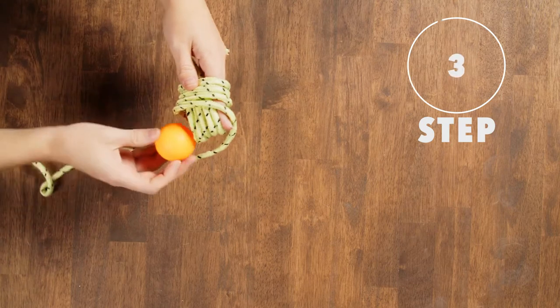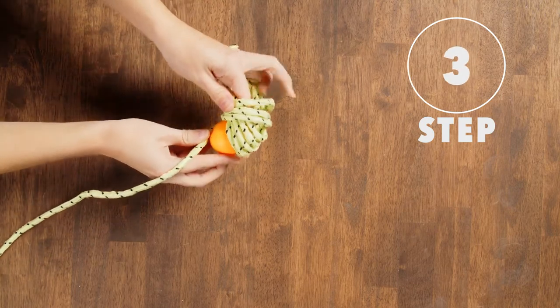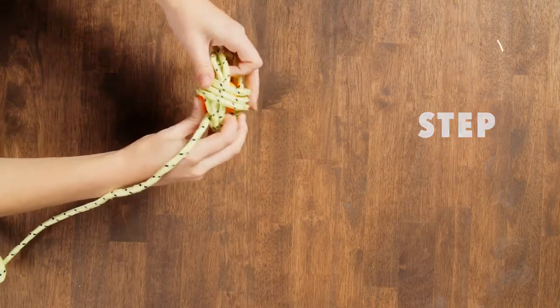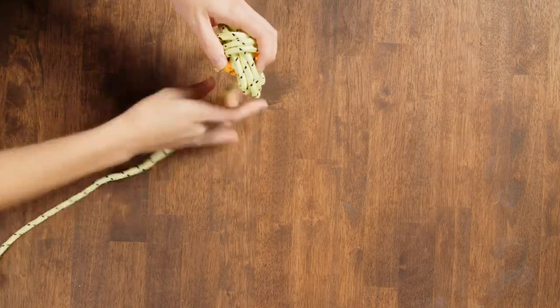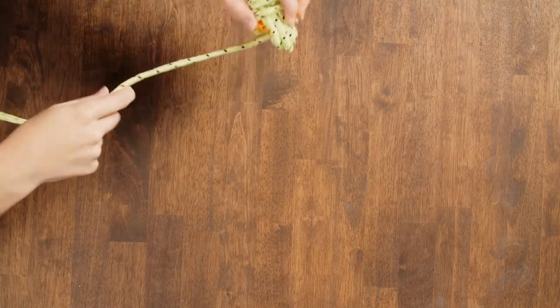Step 3. Place your ping pong ball inside your rope so it's nested inside. Then continue to loop the rope around until you get to five lines across again.